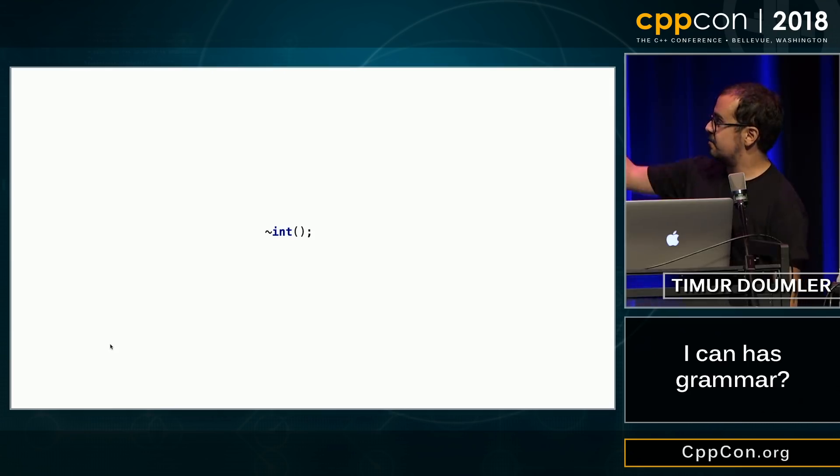Unfortunately, this is, of course, not a destructor. This is a default-constructed int, which is zero, and then bitwise NOT, right? So, this tilde thing is really ambiguous, right? Like, it could be one or the other, so I have a suggestion how to make it better, so that you never confuse destructors with these kind of things.